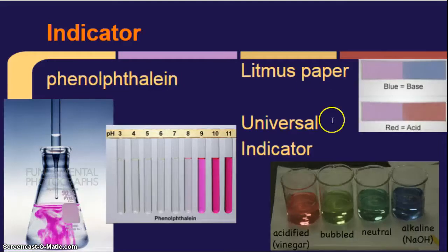Some common indicators are litmus paper. So, litmus papers turn blue if it's a base, like over here. They kind of start out like a purplish. And then if you dip it in acid, it turns red.